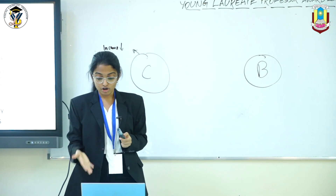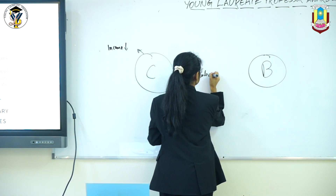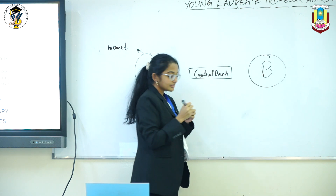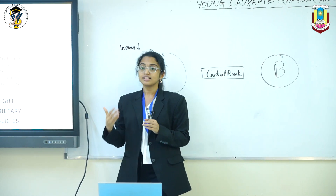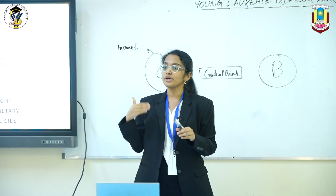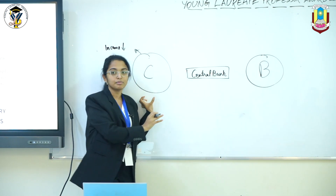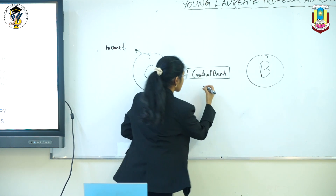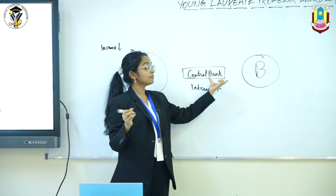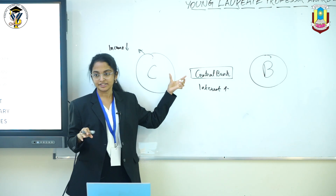Another cause could be the central bank imposing tight monetary policies, such as reducing the money supply or increasing the interest rates. When interest rates are increased, the cost of borrowing increases, so people have lesser money and wouldn't spend as much. Another way is the central bank decreasing the money supply in the economy, so consumers would again have lesser income.